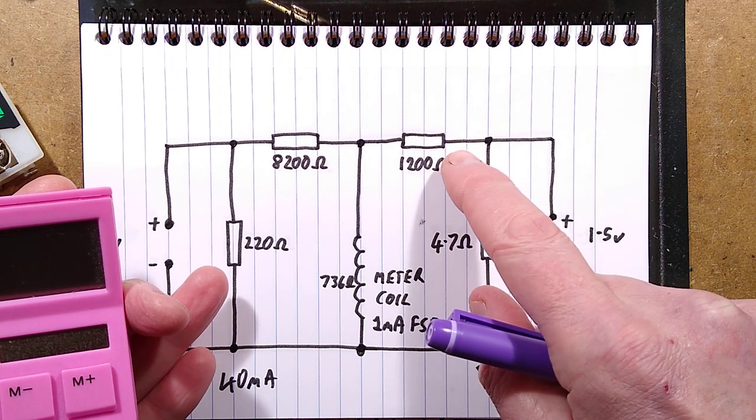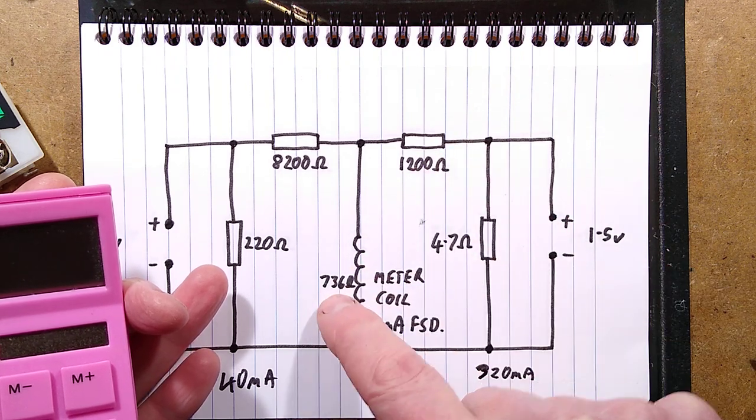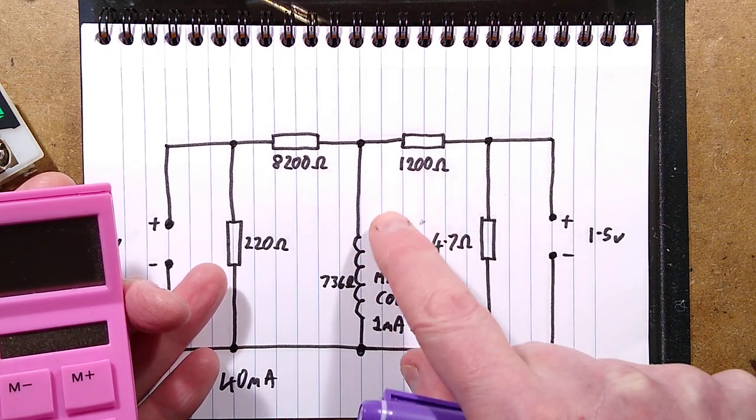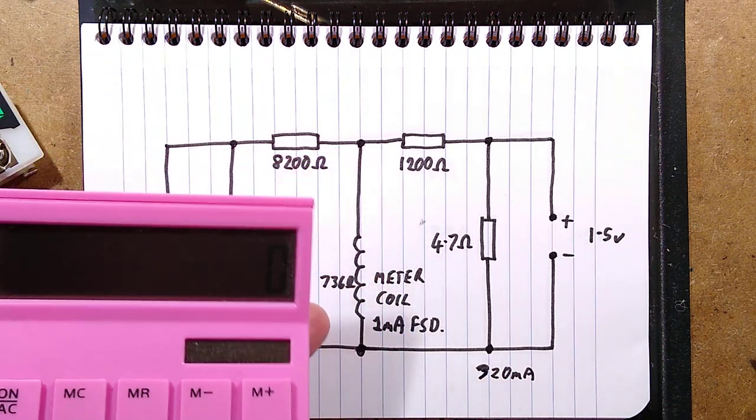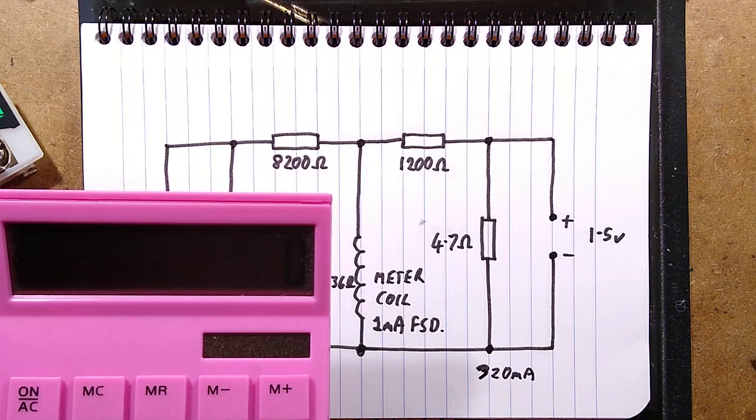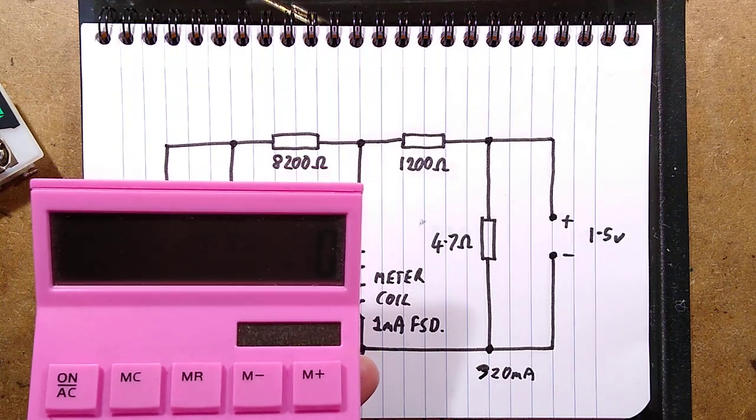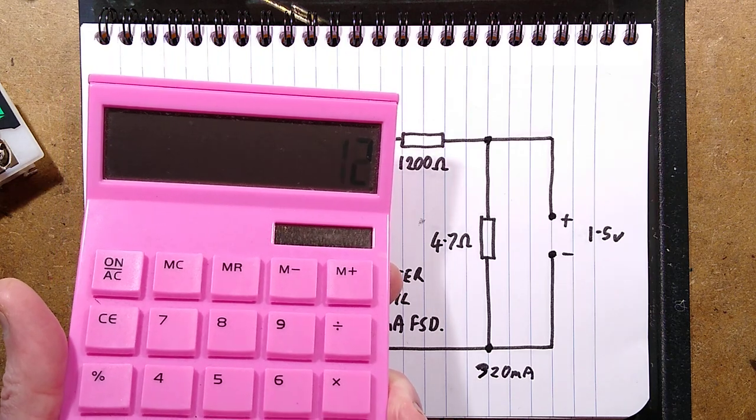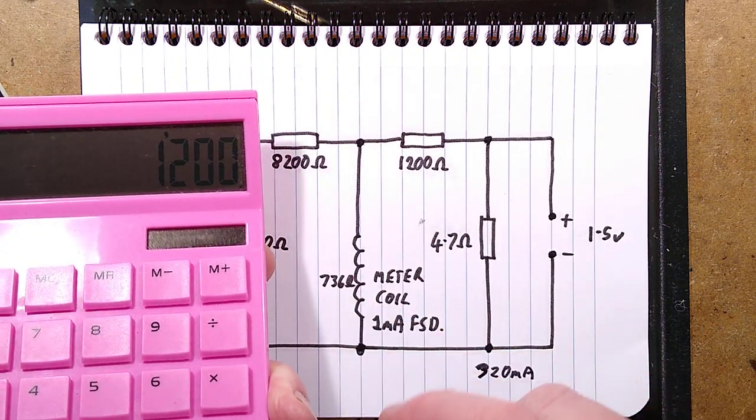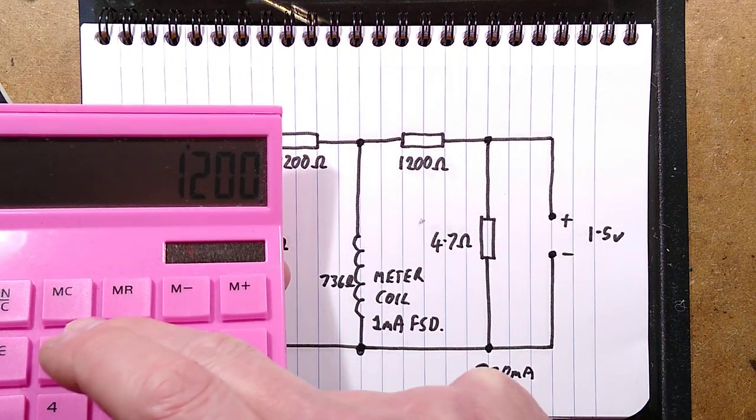So let's get the calculator into action and work that out. So that would be 1,200 ohms plus 736 ohms, which is about 1,936,